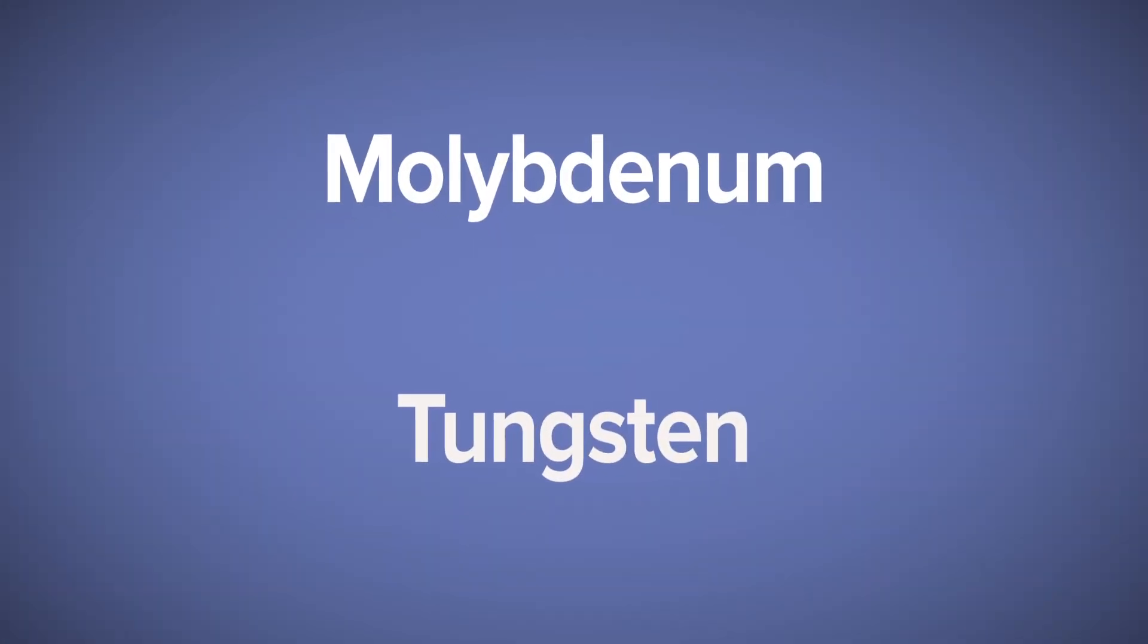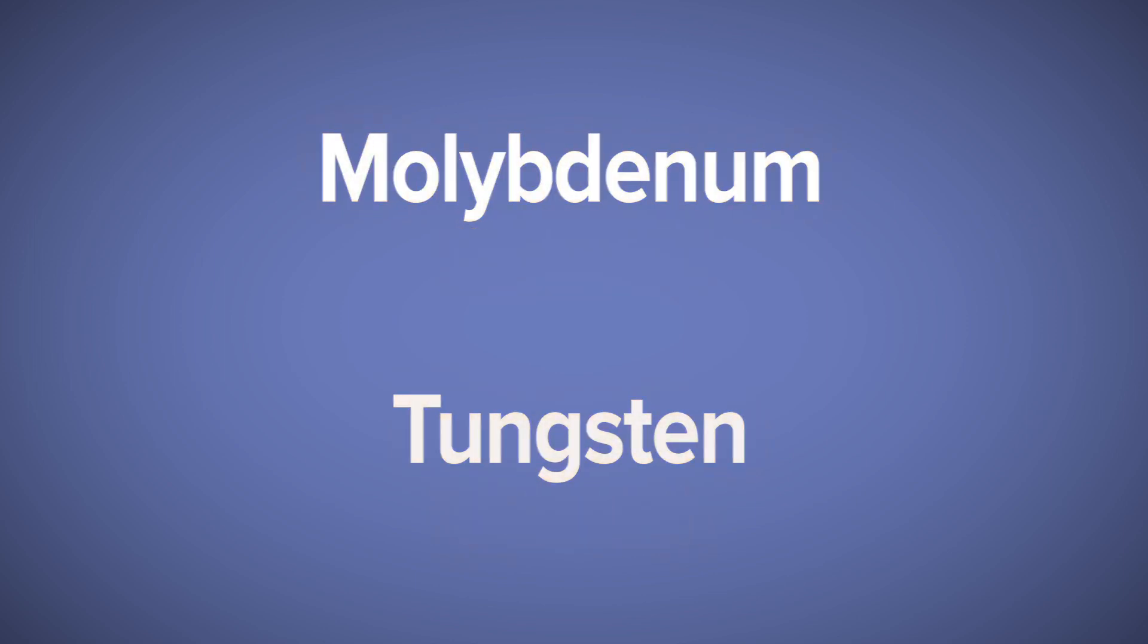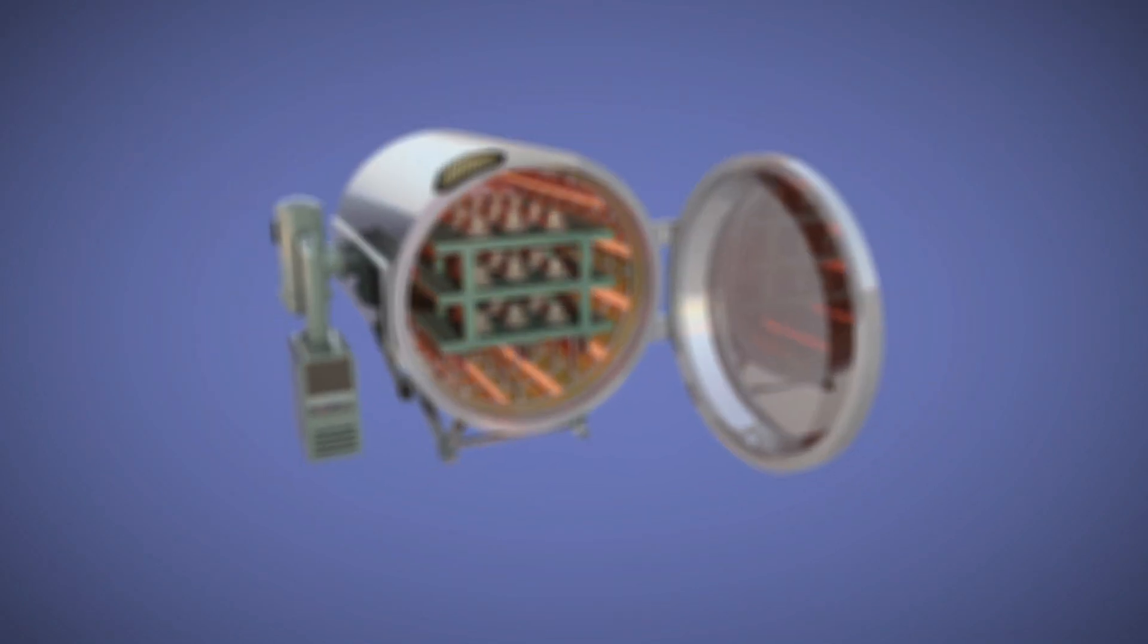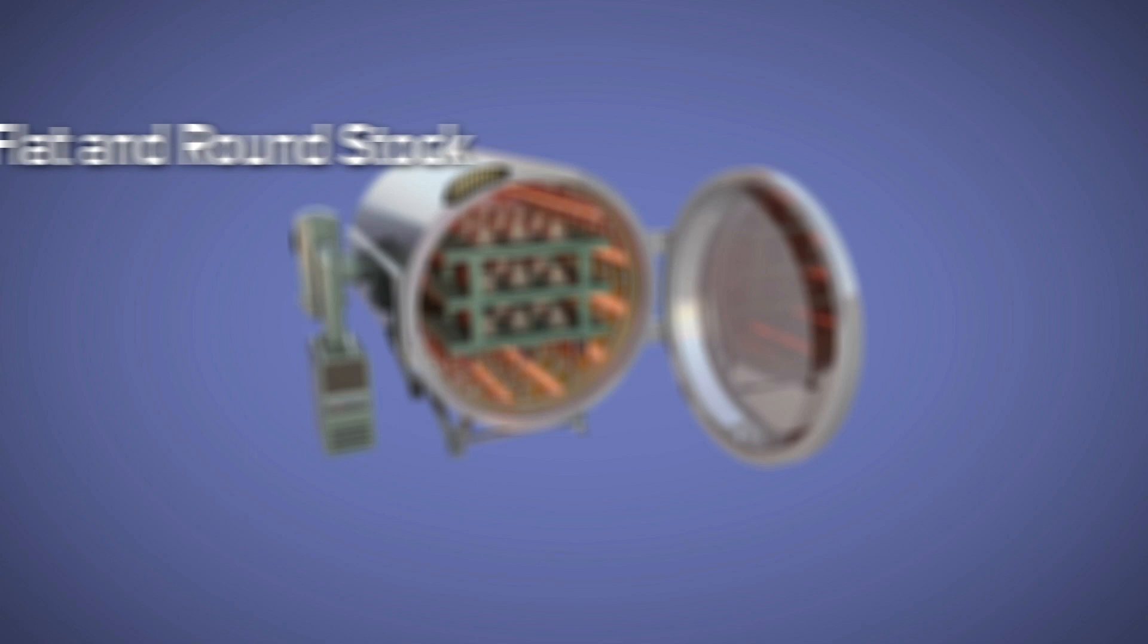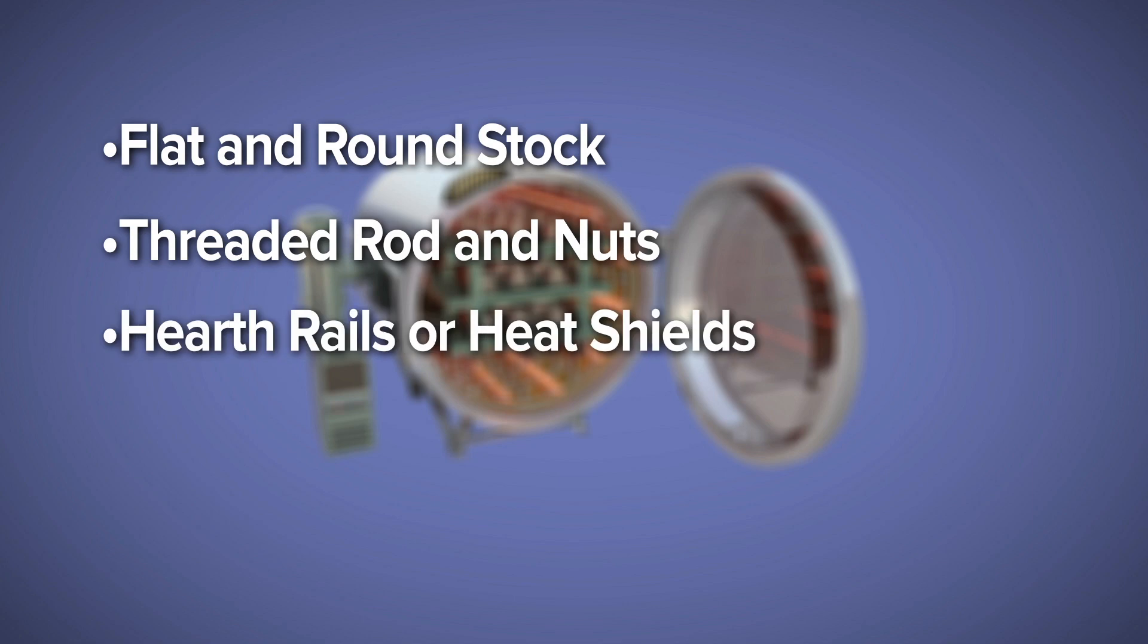Molybdenum and tungsten's high melting point and other properties make them ideal materials for high temperature furnaces with clean hot zone requirements. Our furnace products include flat and round stock, threaded rod and nuts, machined components like hearth rails or heat shields, and formed products like heating elements and element hangers.